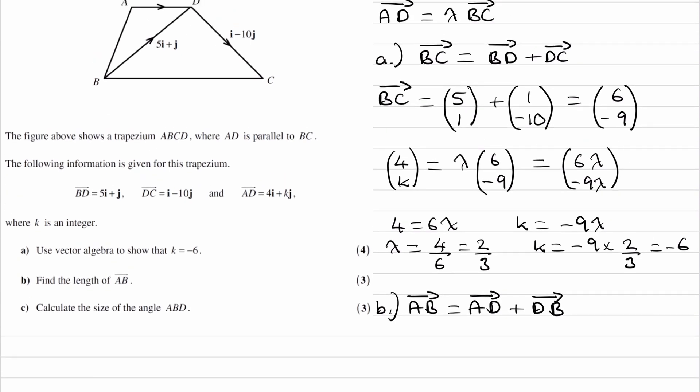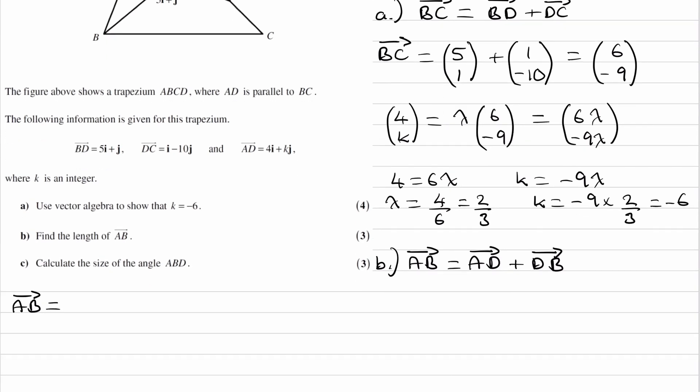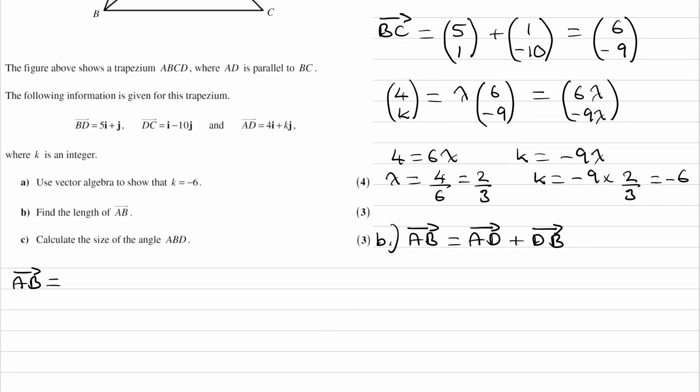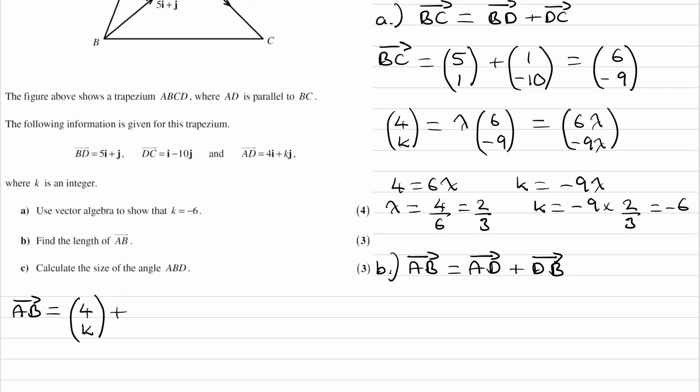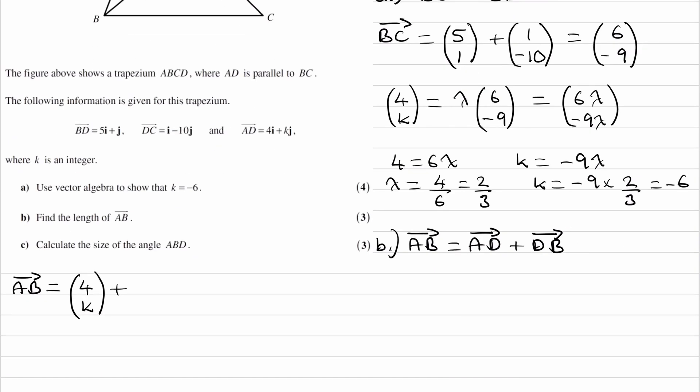So AB is equal to AD. AD is 4K. And then plus DB. DB is the negative of this vector. So DB is the same thing as minus BD. So maybe I'll rewrite that here first. AD minus BD, that's the same thing.